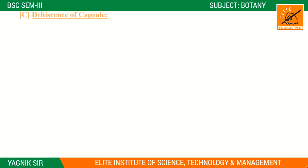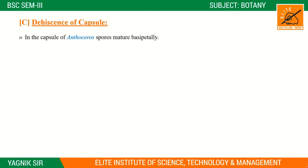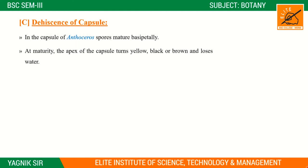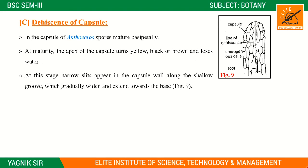Regarding the dehiscence of the capsule: as the capsule matures, the spores turn yellow, black, or brown in color. At this stage, narrow slits appear in the capsule wall along the longitudinal grooves.